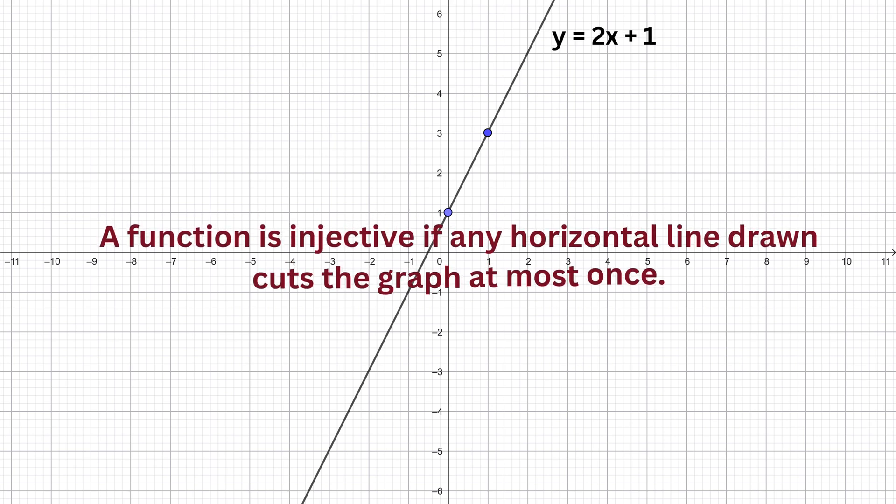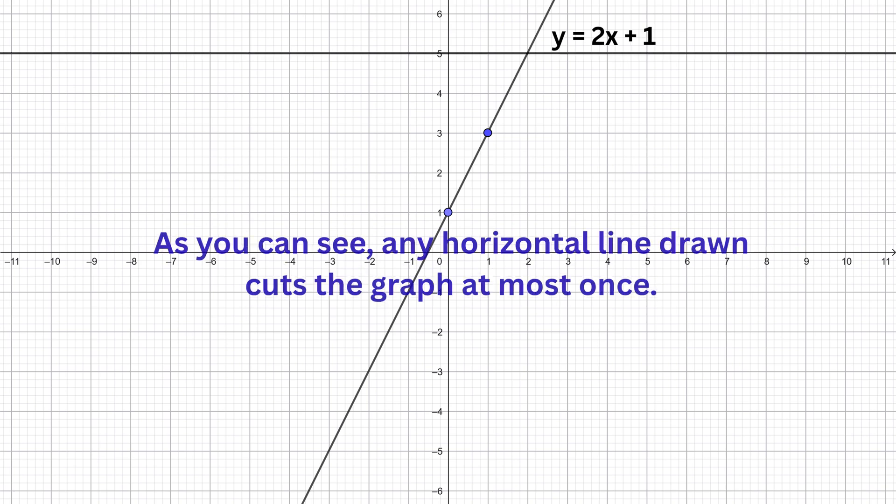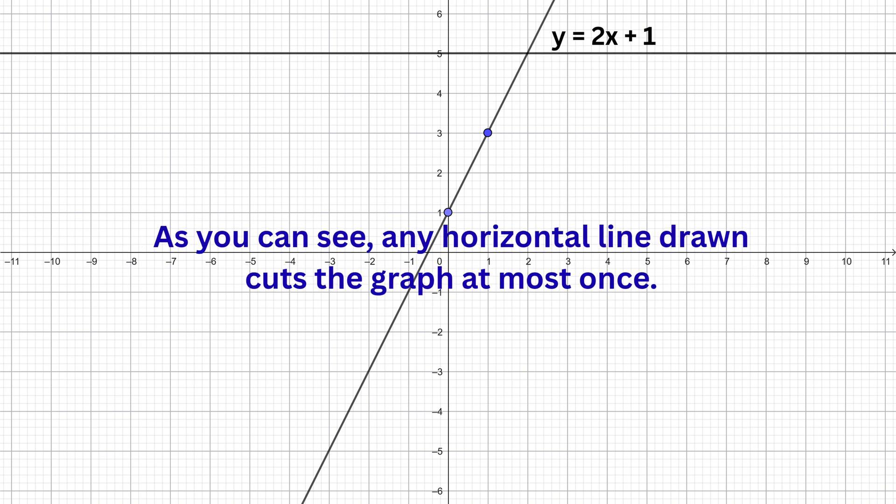A function is injective if any horizontal line drawn cuts the graph at most once. As you can see, any horizontal line that is drawn will only cut the graph of the function at most once. Hence, the function f of x equals 2x plus 1 is injective or one to one.